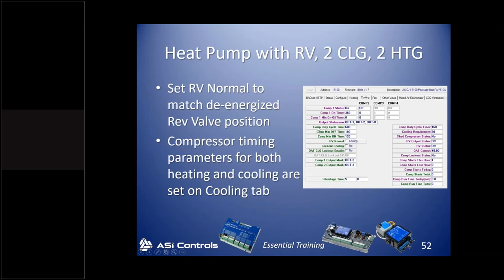Switching over to heat pump, I want to get out of the discharge or economizer case because in our live class it'll be disabled. I found that when left in discharge or economizer mode, I'd use the heat pump to cool and there'd be a delay because it was trying to use the economizer. Since we don't have a valid outside air reading, economizer operation is disabled. I want to change the personality to heat pump with reversing valve.